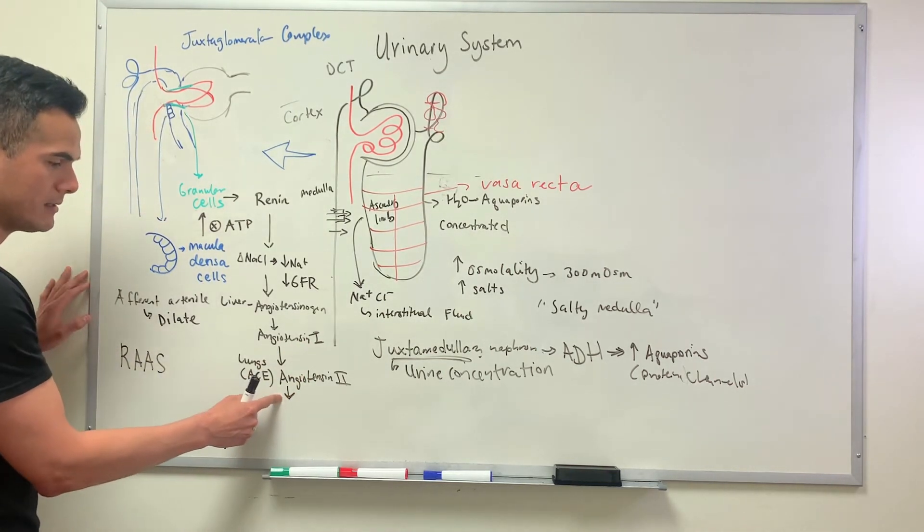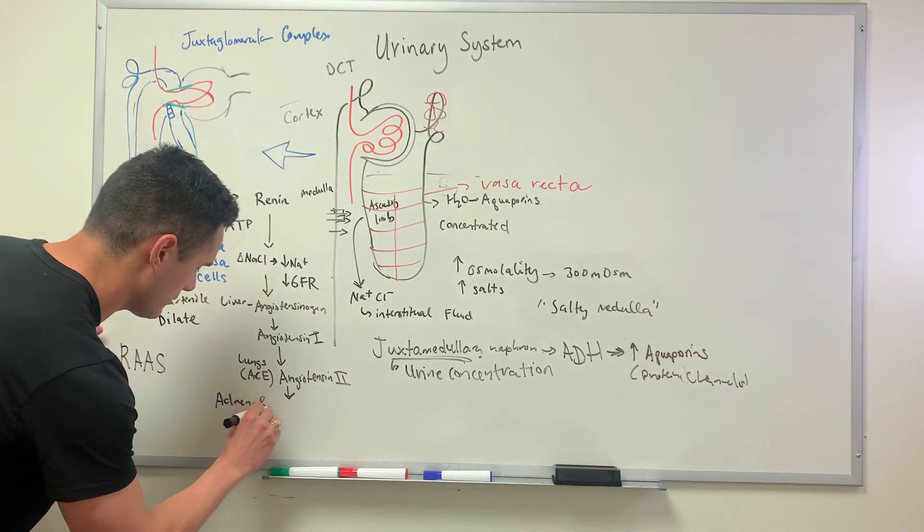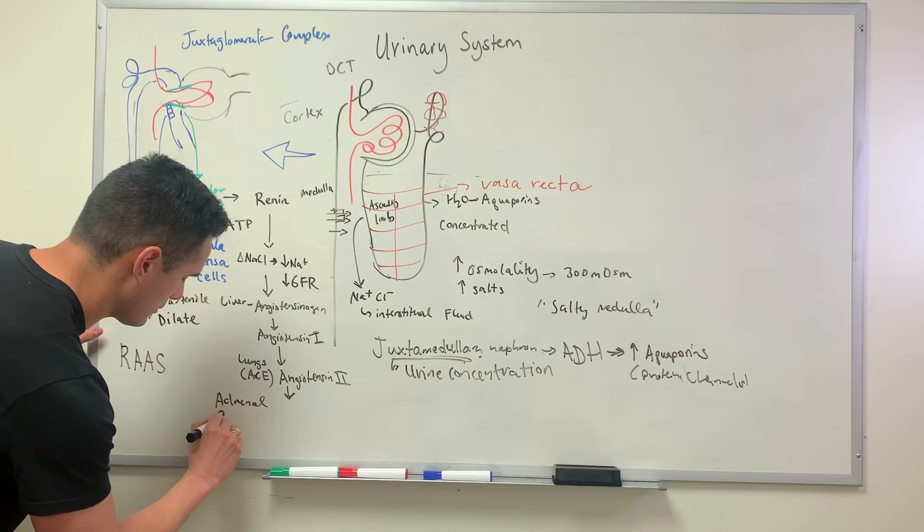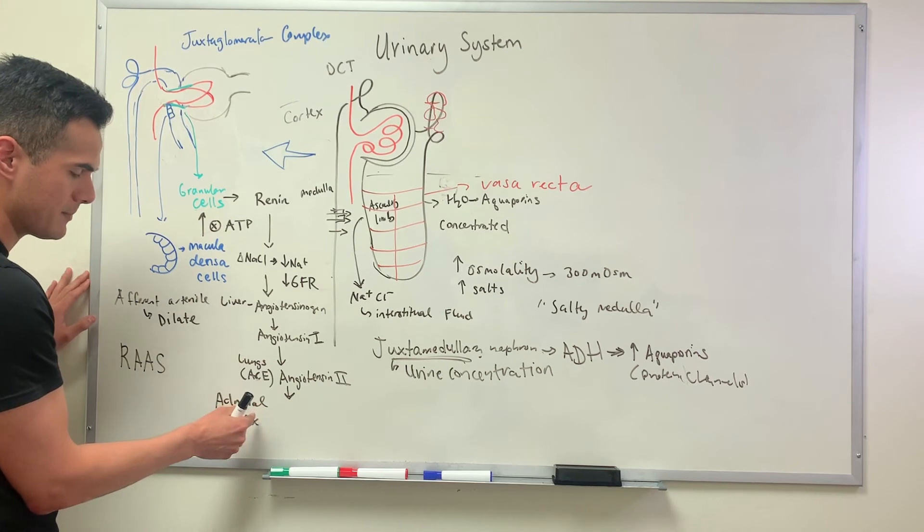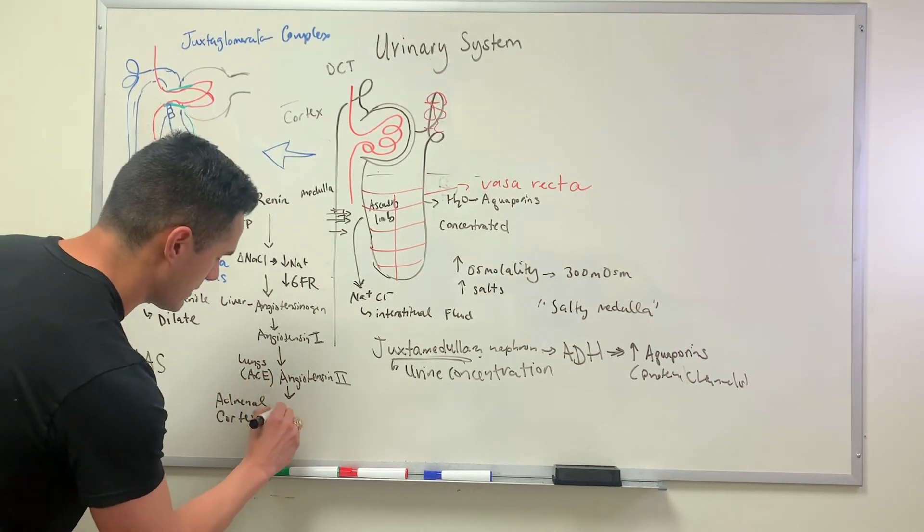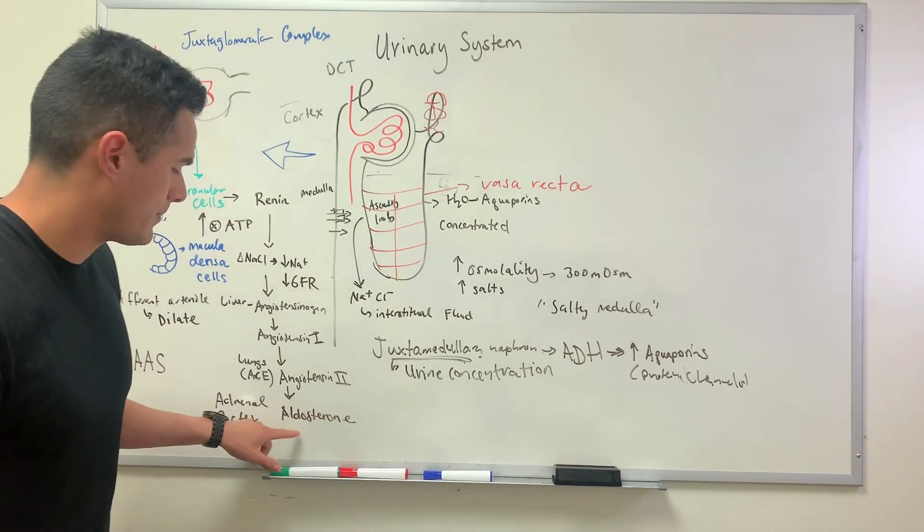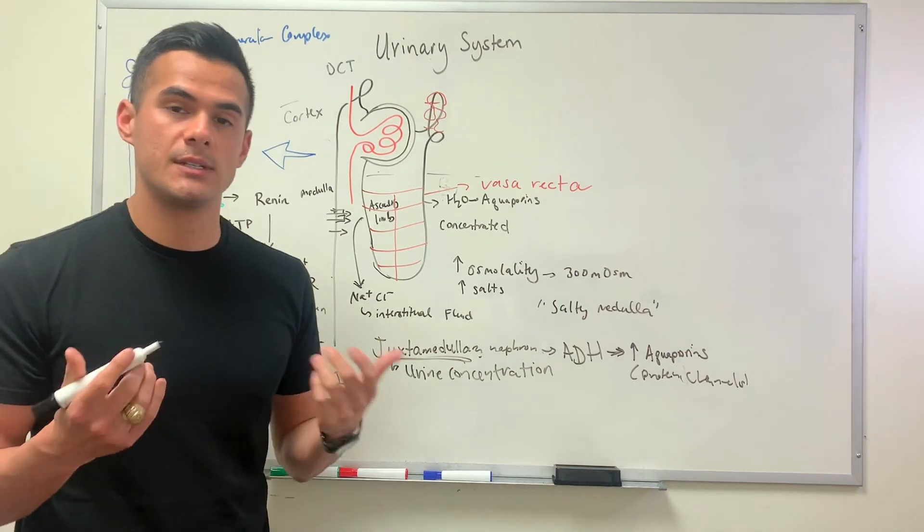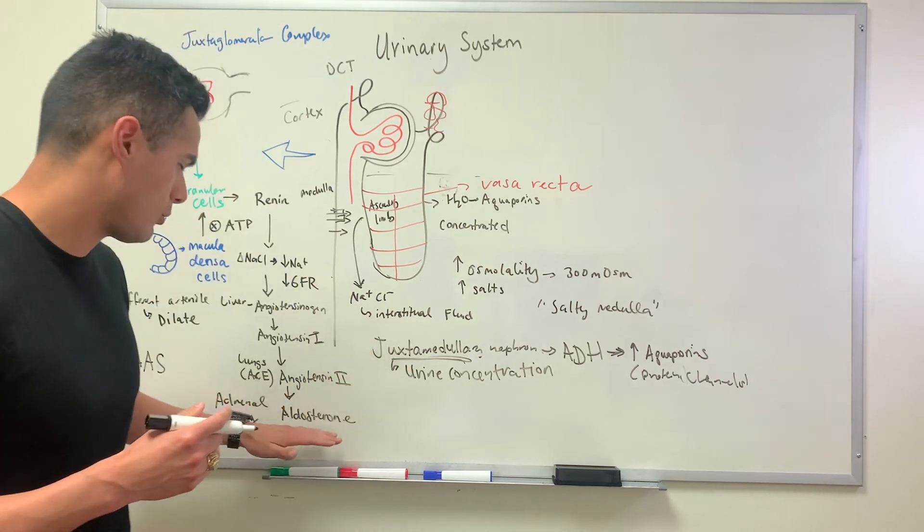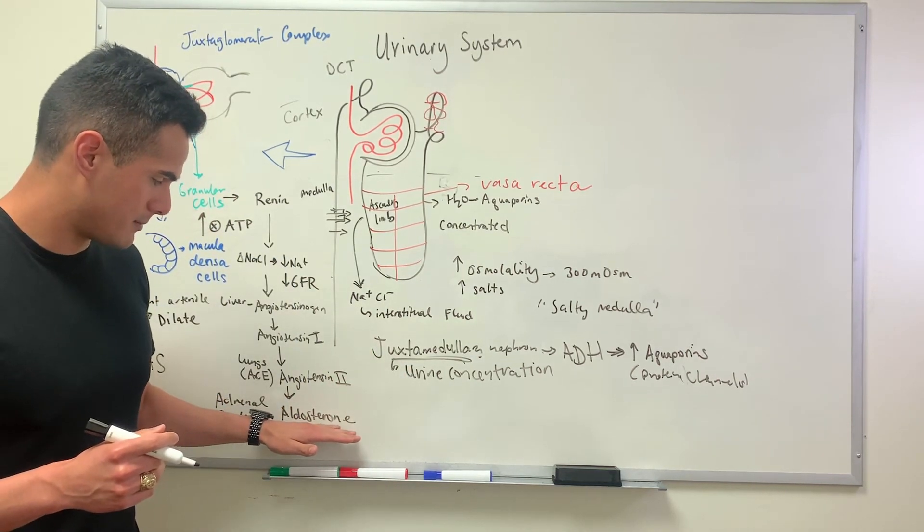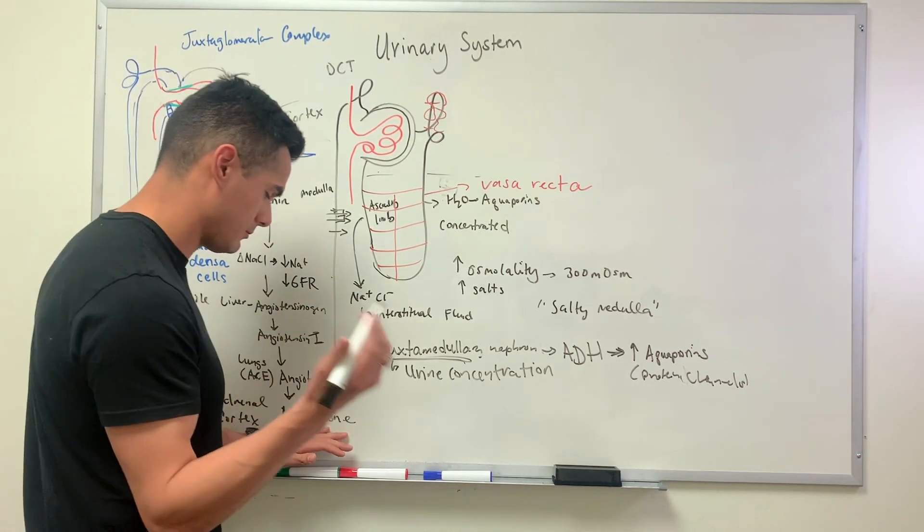Angiotensin 2 continues to travel in the blood before it makes its way to the adrenal cortex. Once it reaches the adrenal cortex it allows the release of aldosterone. Aldosterone is a steroid compound that's derived from cholesterol.